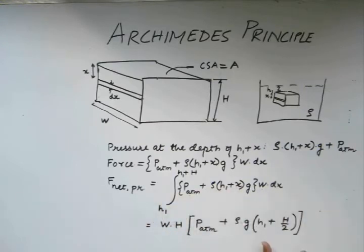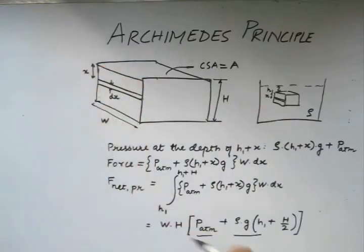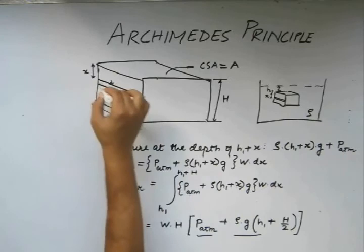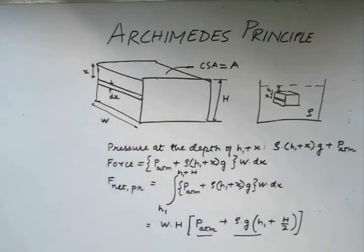This quantity is the net force acting on this face. If we watch closely, P_atm plus ρgh1 is the pressure acting at this depth, and ρg(H/2) is the pressure which is acting halfway down the face. This quantity is known as the average pressure exerted by the liquid on the side face.